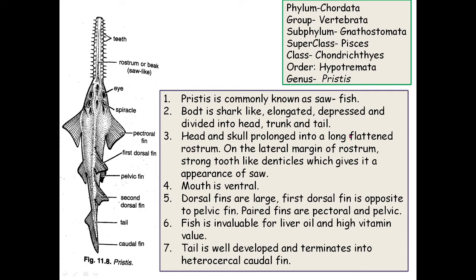The body of Pristis is shark-like, elongated, and depressed, divided into head, trunk, and tail. The head and skull are prolonged into a long flattened rostrum or beak with strong denticles on lateral margins. The mouth is on the ventral side, and the dorsal fins are large.